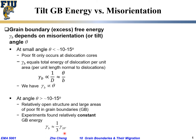In those cases, people find that the grain boundary energy is approaching a constant value which is about one third of gamma_sv — where gamma_sv is the surface energy between solid and vapor, essentially the surface energy of the material.